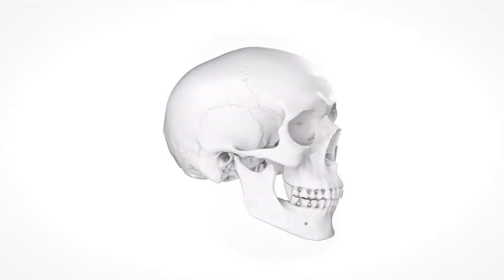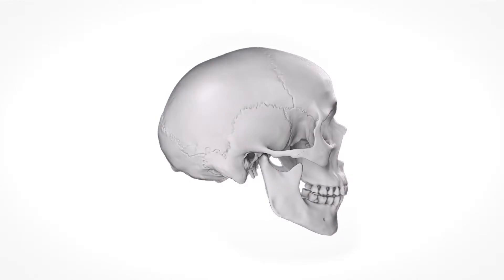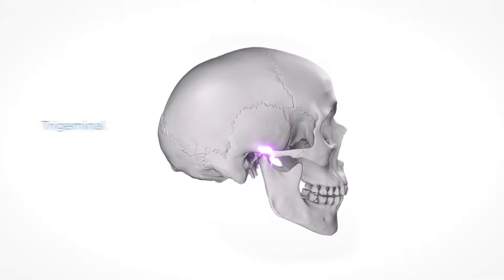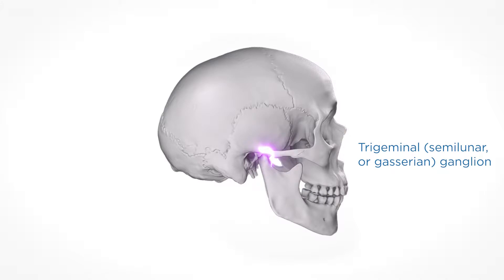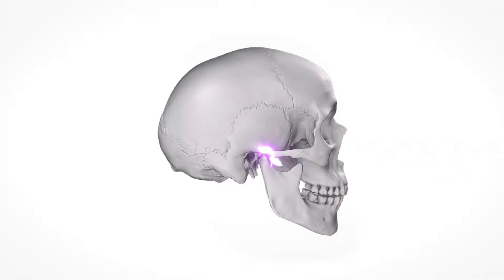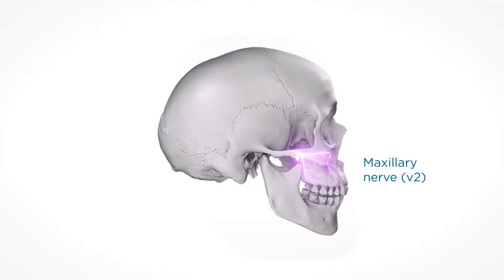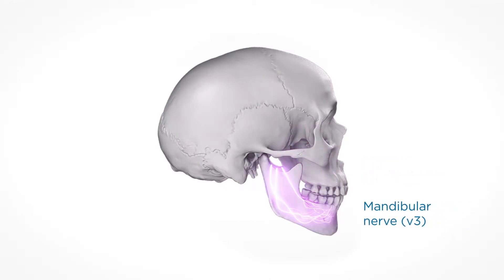The oral cavity receives innervation from the trigeminal or fifth cranial nerve. The sensory cell bodies of the nerve form a large half-moon shaped ganglion called the trigeminal, semilunar, or Gasserian ganglion, situated in the trigeminal depression of the middle cranial fossa. Originating from the trigeminal ganglion are three large nerve trunks: the ophthalmic (V1), the maxillary (V2), and the mandibular (V3).